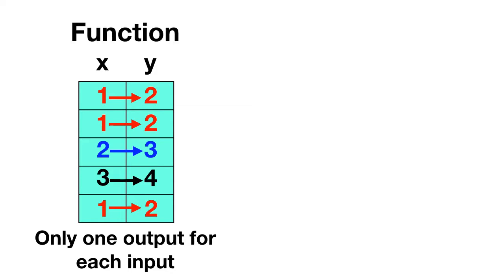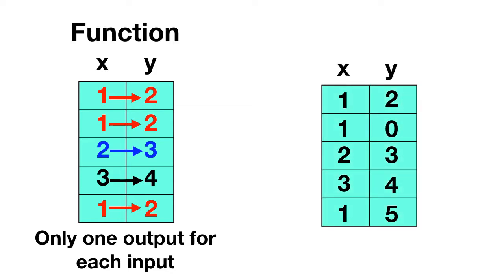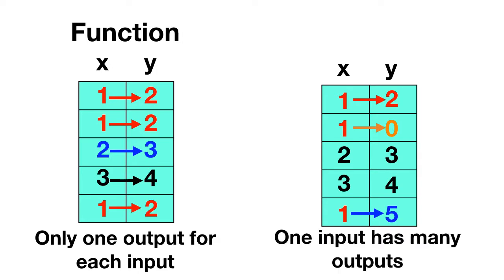In contrast, here's another table. Again, we can see that the input of 1 shows up several times. But in this table, sometimes a 1 gives us an output of 2, sometimes a 1 gives us an output of 0, and sometimes a 1 gives us an output of 5. So on this table, one input — the 1 — has many different outputs. This is not a function; this is a relation.